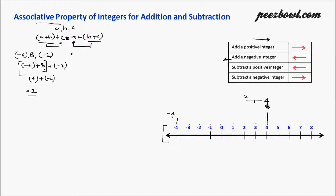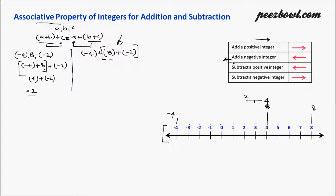This is the result we got from the left hand side equation. Now let us find the value for the right hand side: a (minus four) plus (b plus c), that is eight plus minus two in a bracket. We work on the bracket first: starting at eight and adding a negative integer, we move two units left and reach at six.